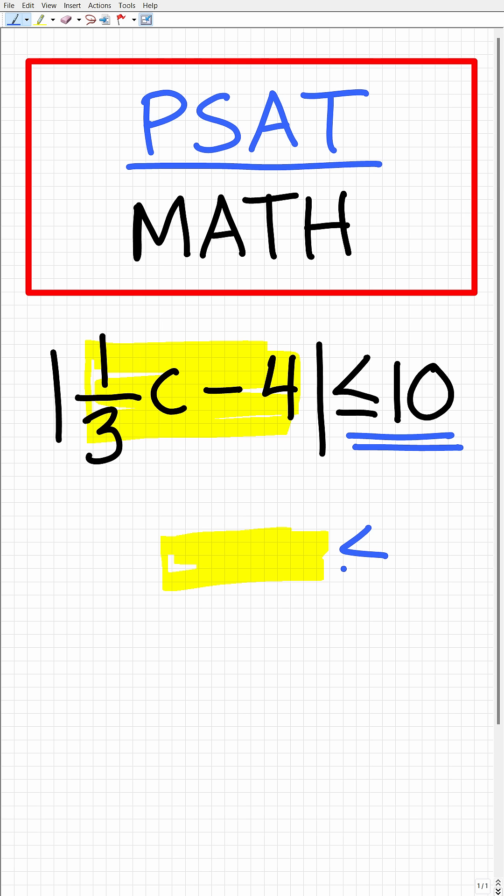So that's going to be less than or equal to 10. But over here, we're going to put a negative 10 and put the same sign. So this is going to be negative 10 is less than or equal to. And then over here, we're going to have less than or equal to a positive 10.